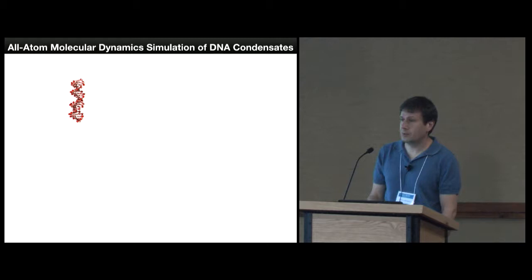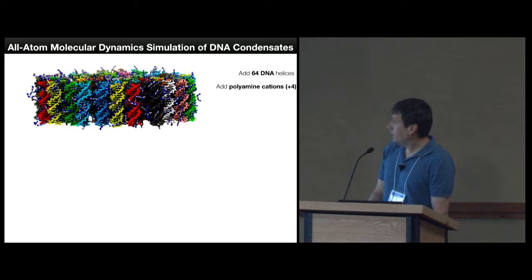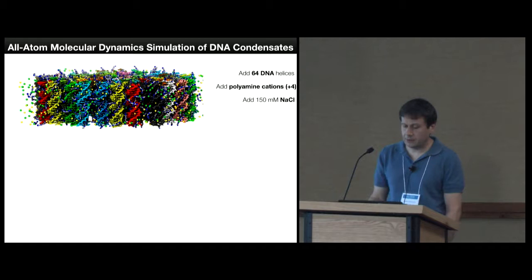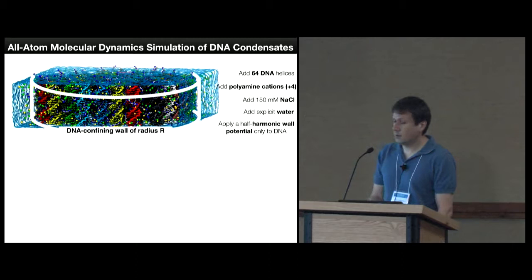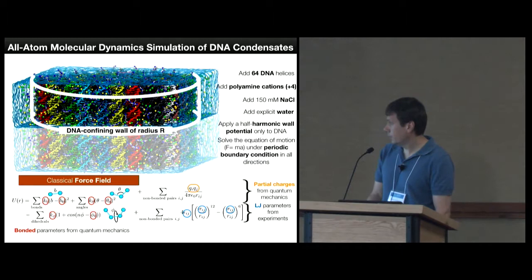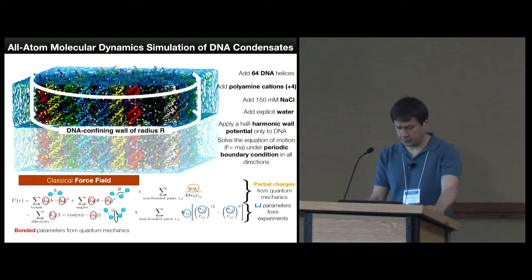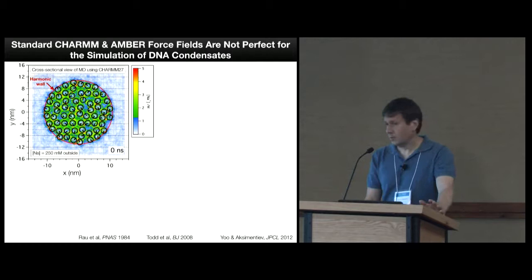So we were curious to use Blue Waters to study the system computationally. Here's how we do it. We build an all-atom representation of the experimental system. In this case, you're looking at one DNA molecule. But of course, with Blue Waters, we can do a lot more than one. Here's 64. And we can add everything that is in the experiment. We add those polycation ions, monovalent ions, water. And then we surround everything with a confining potential so that we can measure the force that the DNA applies to the confining potential. Thereby, we can determine the internal pressure in the DNA array.